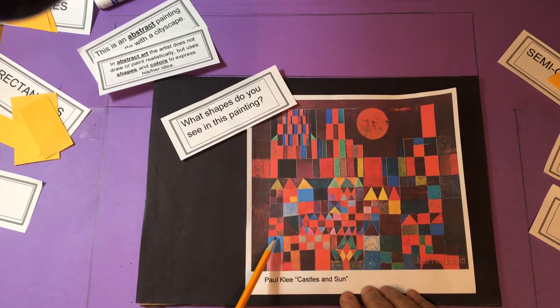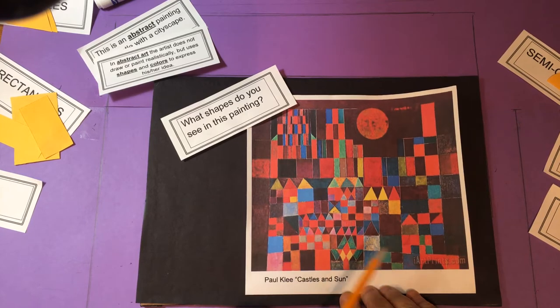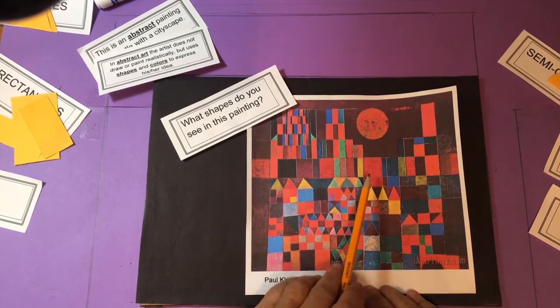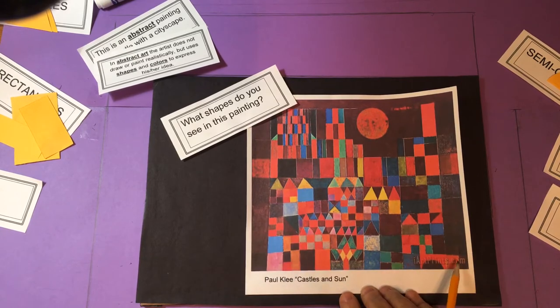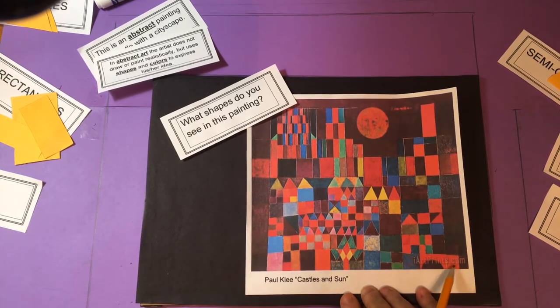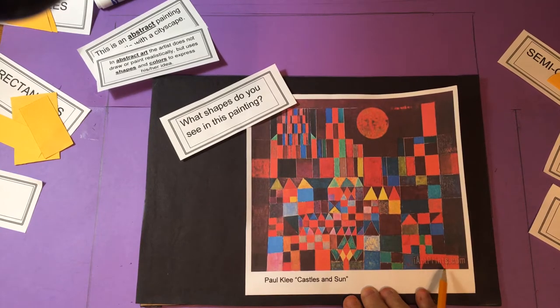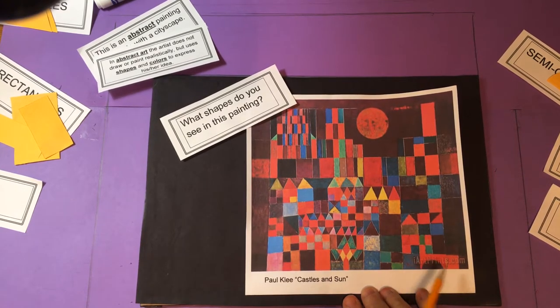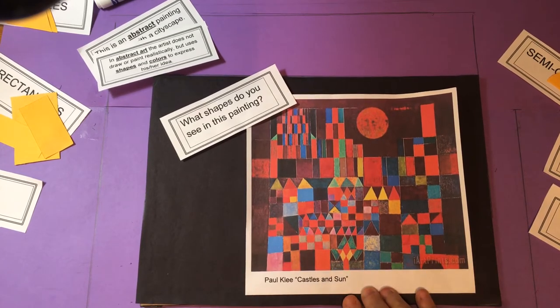There are rectangles. Some are taller, some are shorter, some are wider, some are thinner. Right down here is something called an arch. And an arch has a semicircle. It's like a gateway that you can go through into the castle in the city.